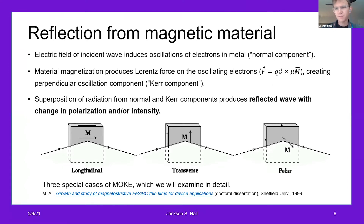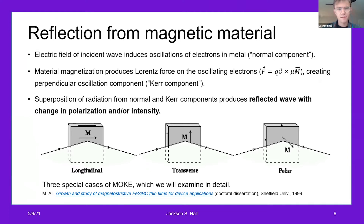Now we turn to reflection from a magnetic material, which is where the Kerr effect occurs. Again, the electric field of the incident wave induces oscillations of electrons in the metal — I'll call this the normal component of the oscillation. But now the material magnetization produces a Lorentz force on the oscillating electrons in the direction of V cross M, the magnetization. This creates an oscillation in a second perpendicular direction, which I'll call the Kerr component. The superposition of the radiation from the normal and Kerr components produces a reflected wave with a change in polarization and/or intensity. There are three special cases customarily examined for MOKE — longitudinal, transverse, and polar — which depend upon the orientation of the magnetic field in the sample.